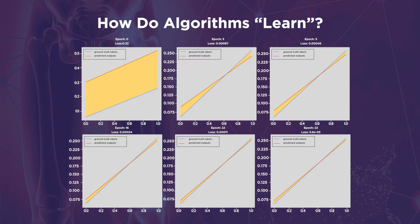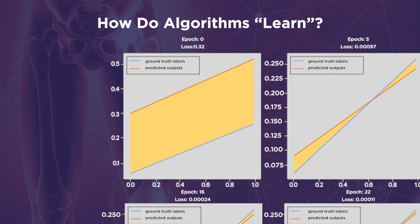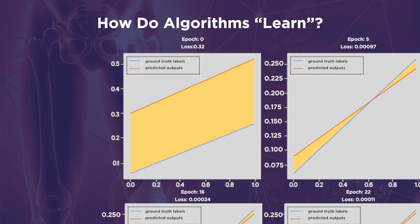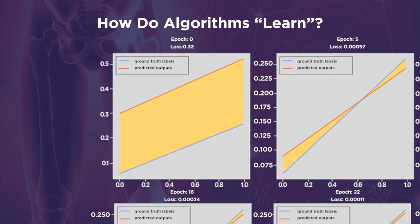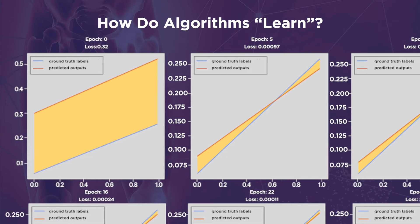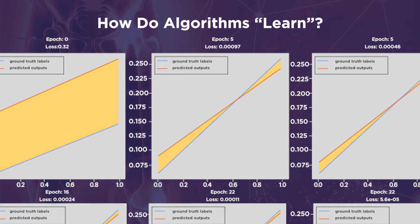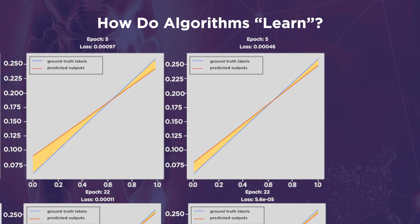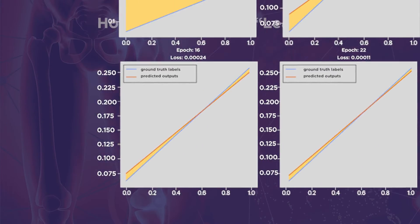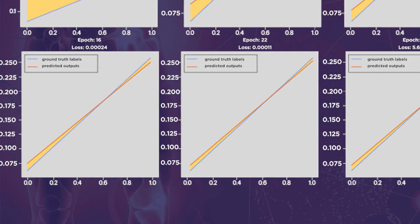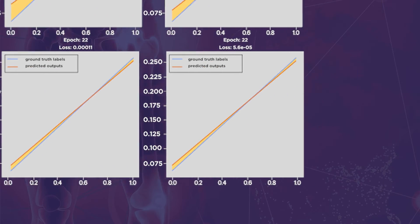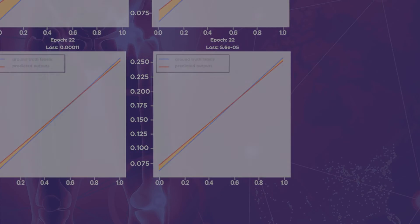In each graph, the blue line represents the ground truth line that the model should ideally predict, while the red line represents the model's prediction. You can see that the red line gets closer and closer to the blue one as training goes on, almost overlapping the blue line after a certain point.